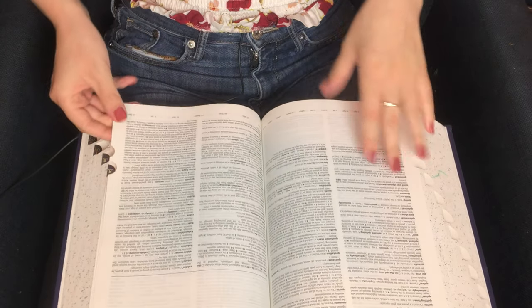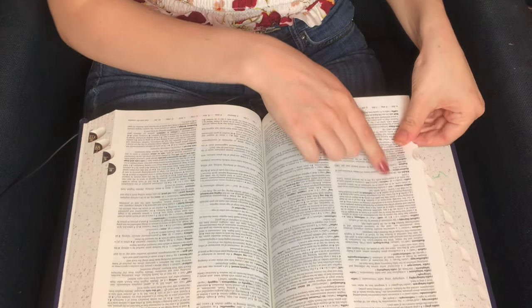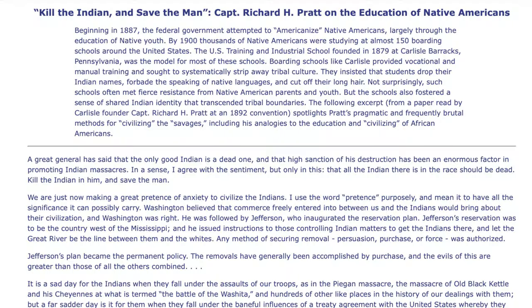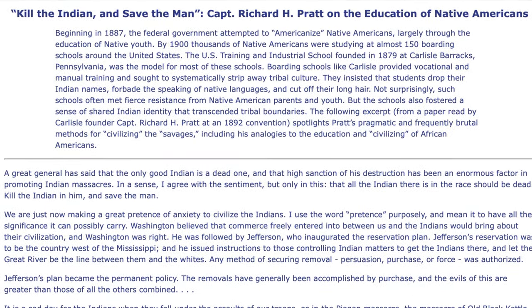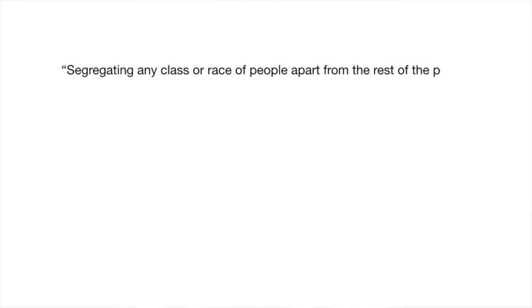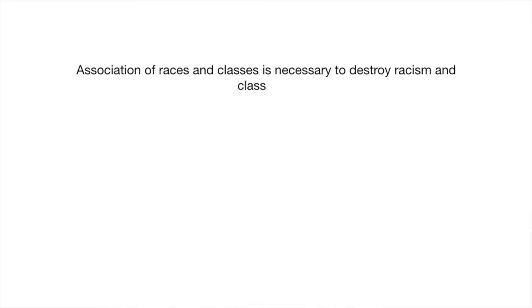The word racism — not the concept — is relatively new. The Oxford English Dictionary, which is often used as the authority on things like this, dates its first use to 1902 by Richard Henry Pratt, who also was a bit of a racist himself. Here's the quotation: "Segregating any class or race of people apart from the rest of the people kills the progress of the segregated people or makes their growth very slow. Association of races and classes is necessary to destroy racism and classicism."